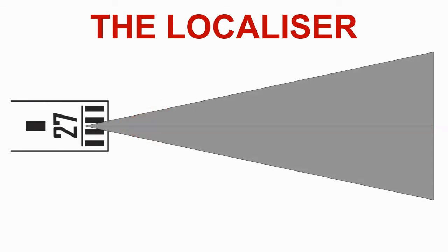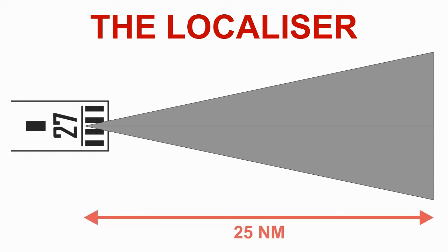An antenna near the runway transmits a frequency-modulated horizontal signal, which is active from the end of the runway outwards. This beam is called the localizer, and provides the lateral signal. The signal can travel quite far, but a standard ILS localizer will normally be rated as safe to use within 25 miles of the airfield.